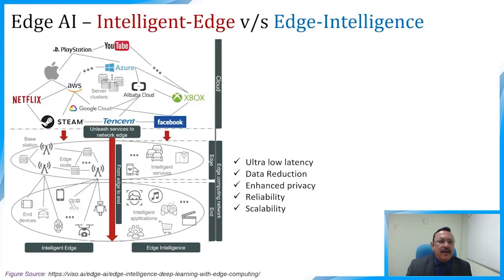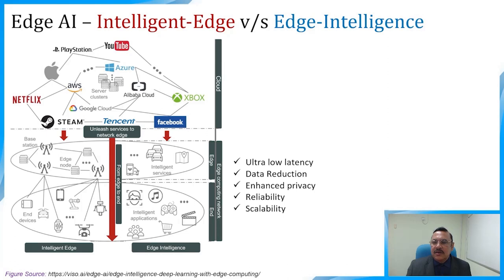In Edge AI, we are going to see intelligent edge versus edge intelligence — there are two different concepts. Edge computing is gradually being combined with artificial intelligence, benefiting each other in terms of realization of artificial intelligence at the edge, that is called Edge AI. Edge AI can be classified into two categories: edge intelligence (EI) and intelligent edge (IE).